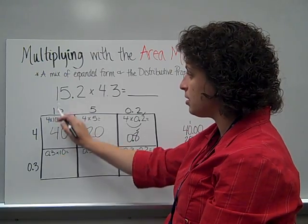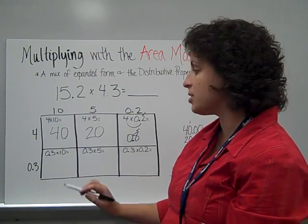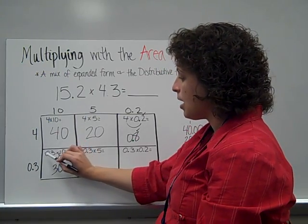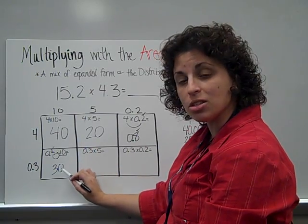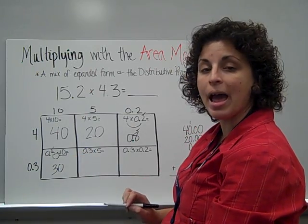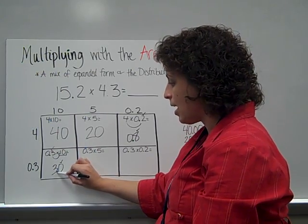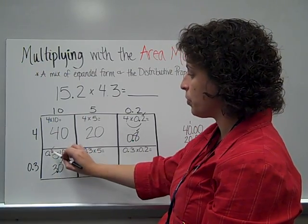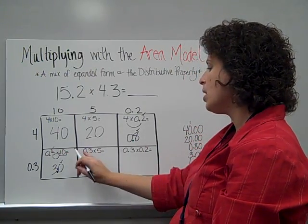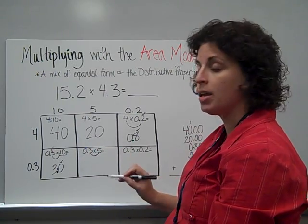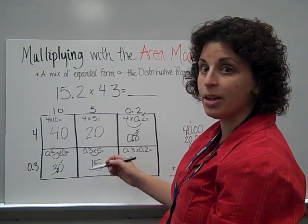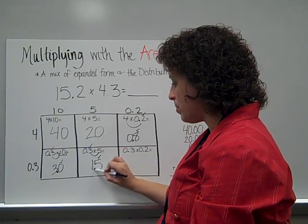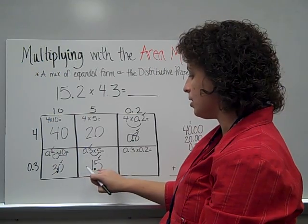Let's look at our second row. Zero and three-tenths times ten: I ignore the decimal for a moment and do three times ten, which is thirty. But it wasn't three — it was three-tenths, so there is one digit behind the decimal. Out of these digits, one has to be behind the decimal, starting at the back. That gives us three and zero-tenths. Zero and three-tenths times five: ignoring the decimal, three times five is fifteen, but it was three-tenths — one digit behind the decimal — so one of these digits, the five at the back, has to be behind the decimal. Zero and three-tenths times five equals one and five-tenths.